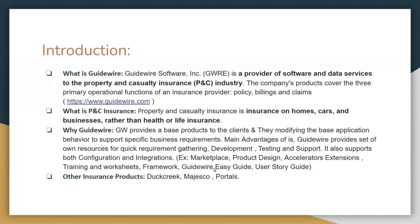Whenever anyone is part of the Guidewire team, they get access to all these applications. These applications are mainly for developers, but senior folks on the team can access product design — how products are configured from the product designer. Accelerators and extensions are for developers. Training and worksheets include the application guide so team members can learn from it. Frameworks are provided for QA and developers. The Guidewire easy guide covers policies, application guides, and user story guides — covering how user stories should be written and how the product model is configured in Guidewire applications.